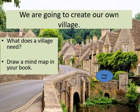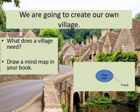Now, as you know, we're going to create our own village. So what does a village need? I want you to draw a mind map in your book of all the things you think a village needs. A mind map has a circle in the middle with the topic, and then lines coming off it with all the different things. I've got 'village needs' in the middle — it needs food, medical care, education, all those things. Do a mind map with as many things as you can think of, and when you've done that, go to the next slide.